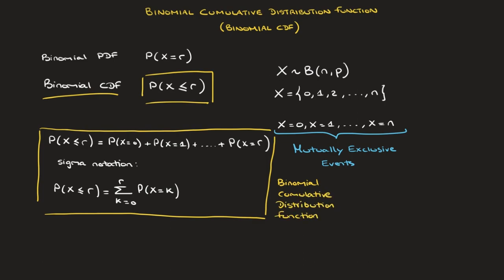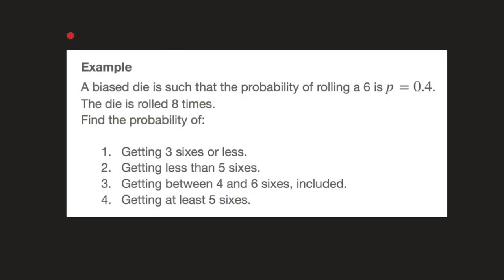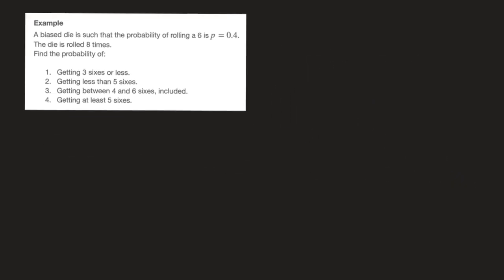That's it for the theoretical part of this video. Let's move on and see how to use this with an example. We're told that a biased die is such that the probability of rolling a 6 is p equals 0.4. The die is rolled 8 times. We need to find the probability of getting three sixes or less, less than five sixes, between four and six sixes included, and the probability of getting at least five sixes. Each of these four questions serves its purpose, and I'd recommend you watch all of them.